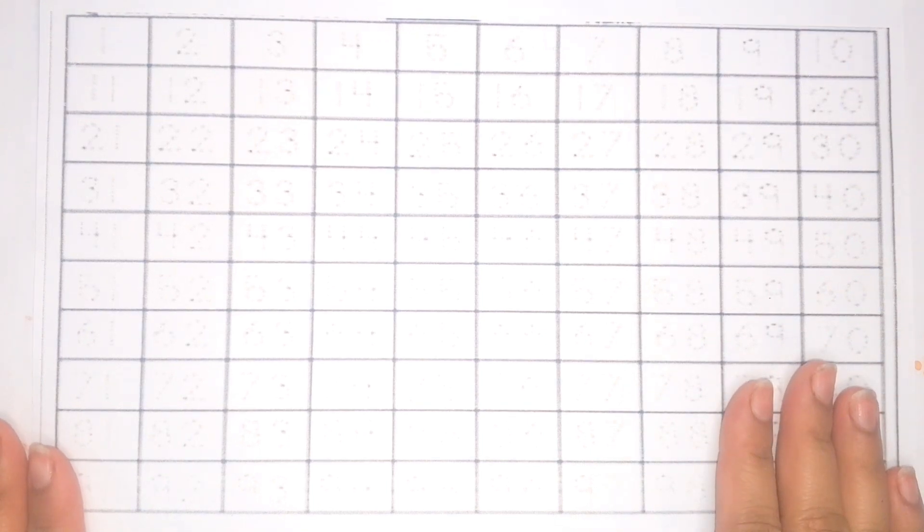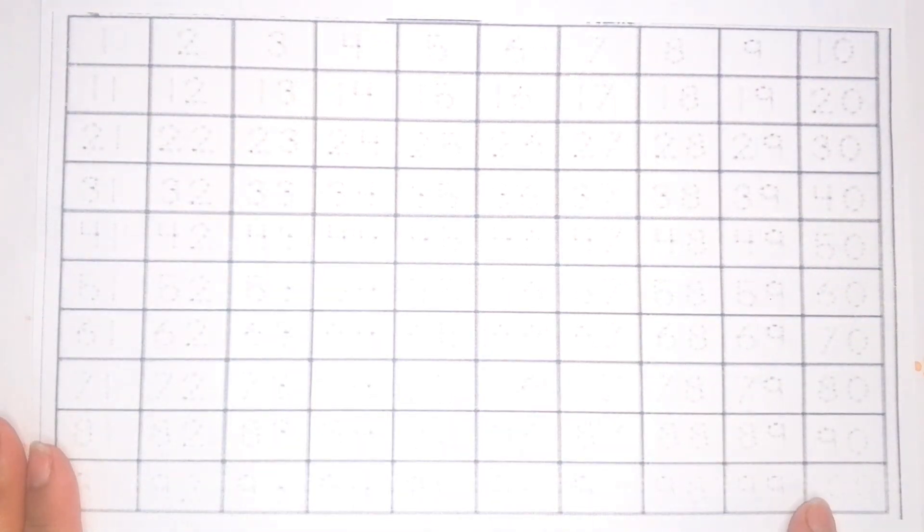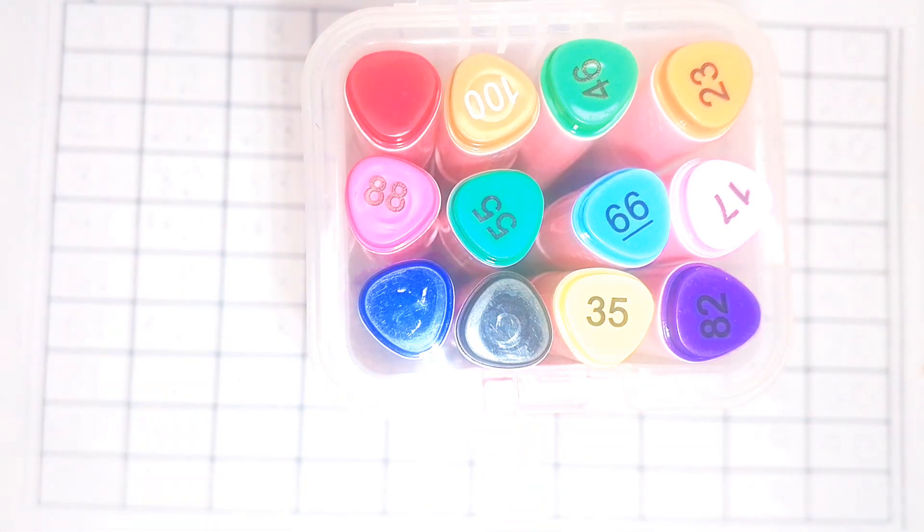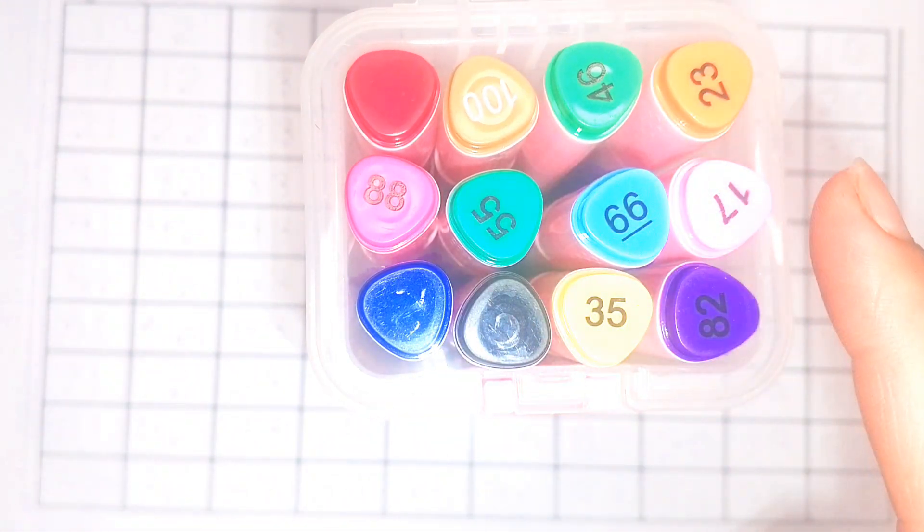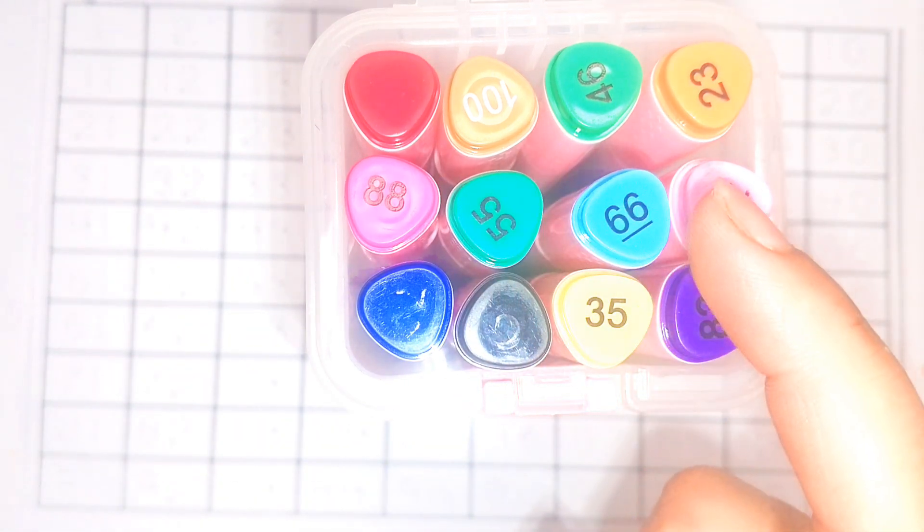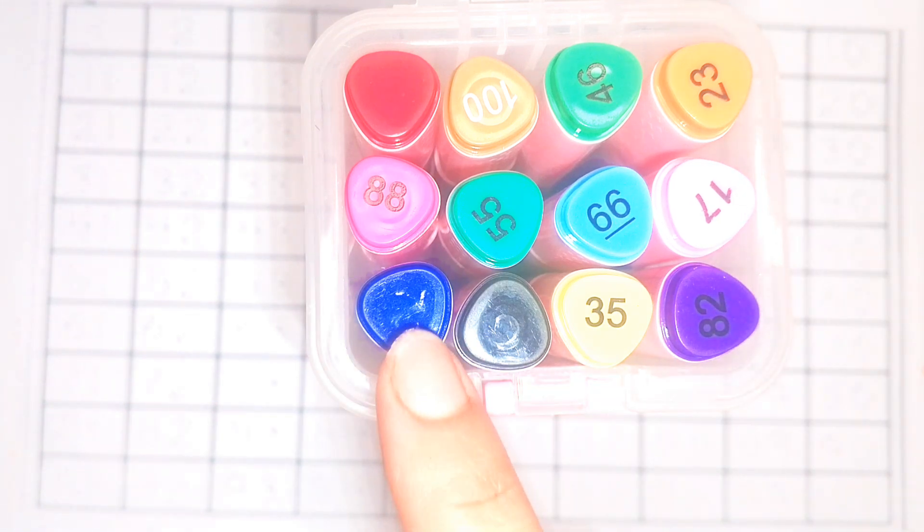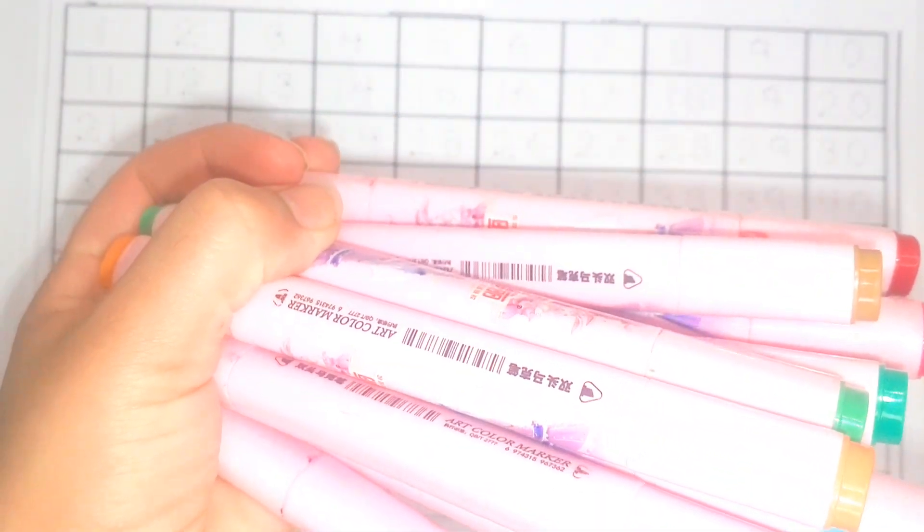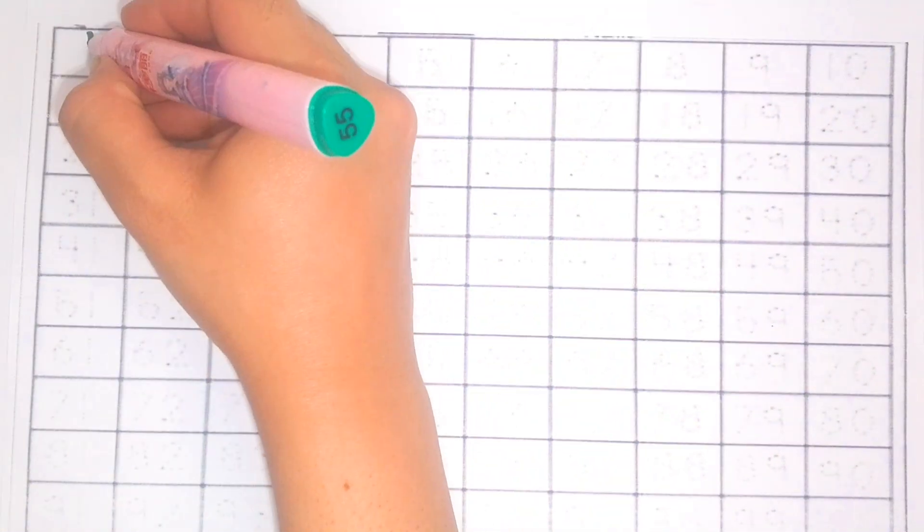Hello kids, today we learn counting 1 to 100. Let's learn about colors. Here are red, brown, green, orange, pink, light green, light blue, light pink, blue, black, yellow, purple. Let's write with these beautiful colors. Are you ready? One.